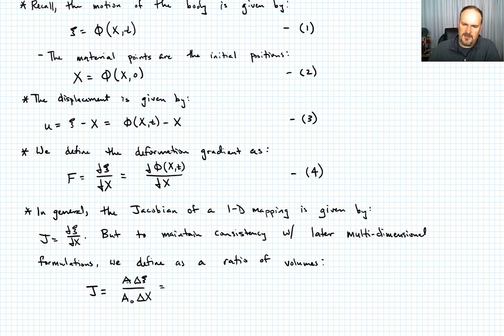We have functions that define A, and so we could write this, pull this out, A over A₀ times, we can take the differential now, take the delta small enough, something like that. And we know this ∂ξ/∂X from equation 4, so this looks like A over A₀ times F. Call that equation 5.